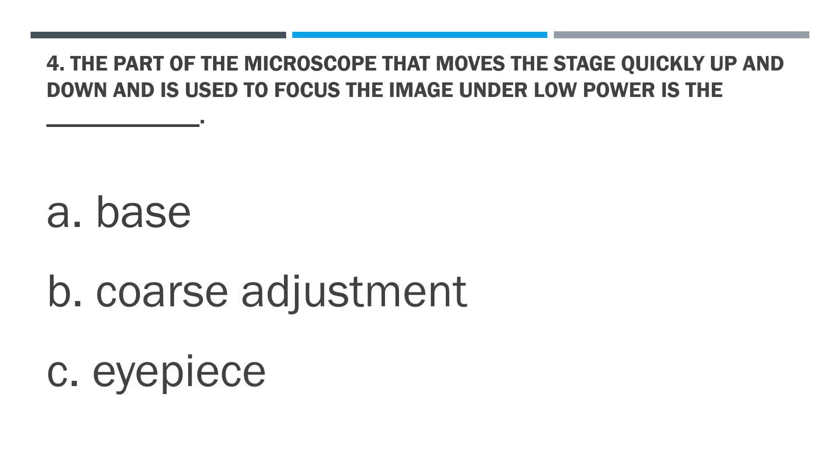Question 4: The part of the microscope that moves the stage quickly up and down and is used to focus the image under low power is the blank.